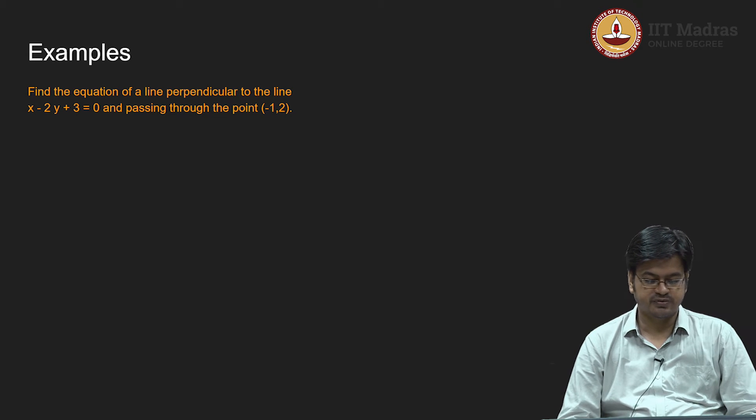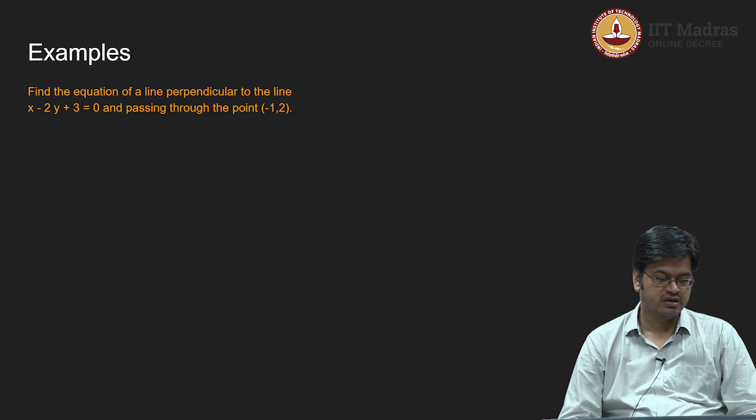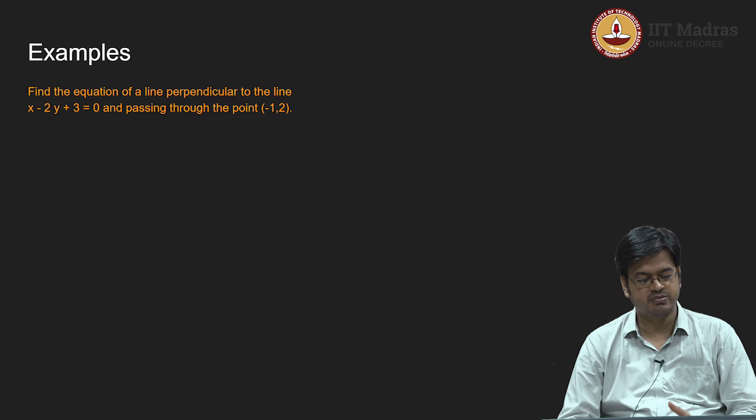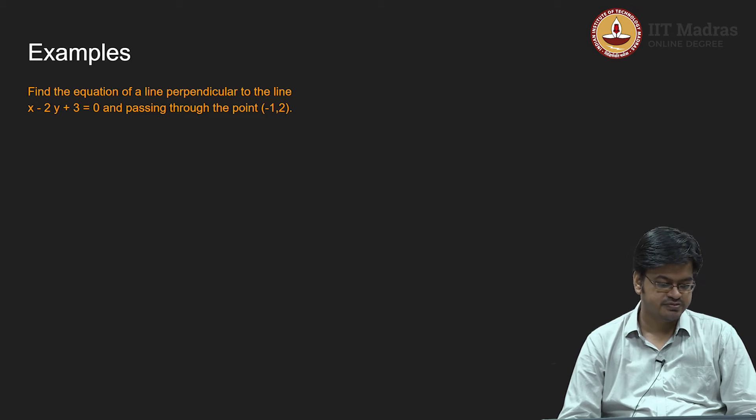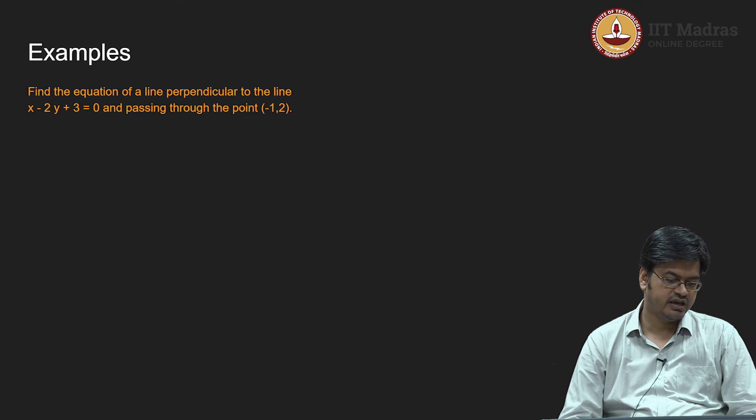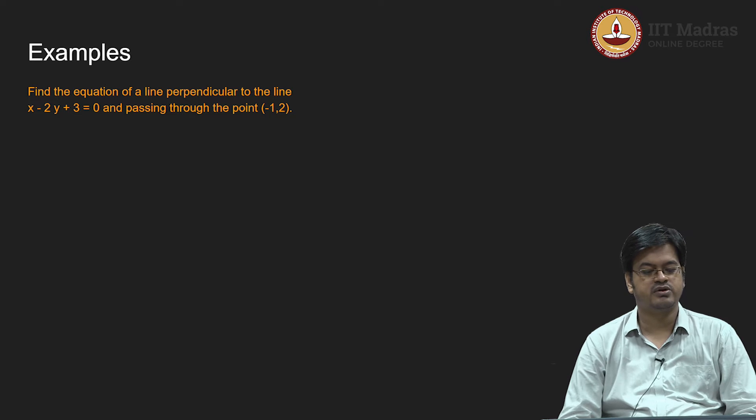In this case let us identify the general form of the equation, that is ax plus by plus c equals 0. You can easily see that a equals 1, b equals minus 2, and c equals 3.